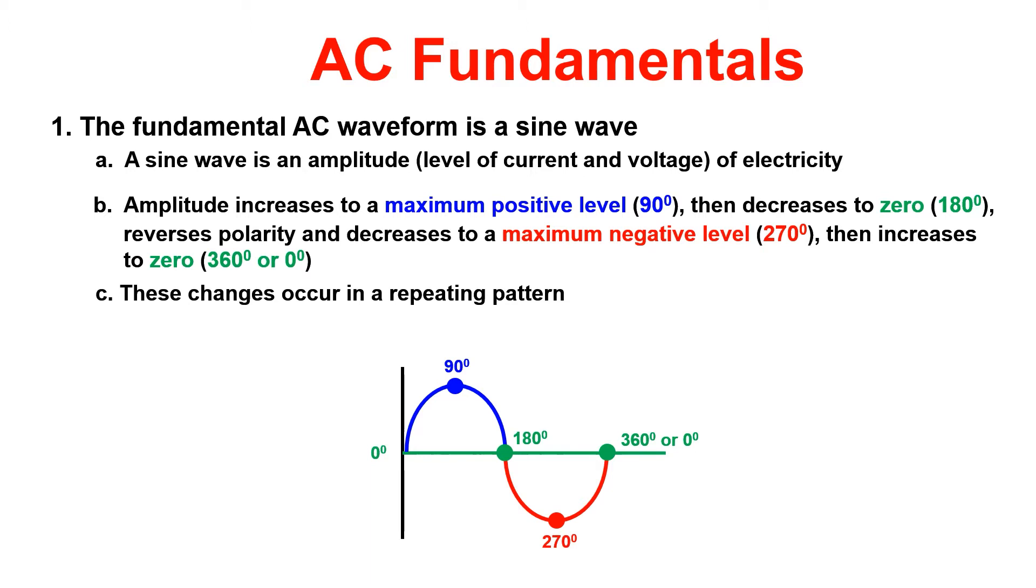Below in the graph you can see starting on the left and moving right amplitude increases from 0 degrees to 90 degrees where the maximum positive voltage will be seen. The wave then falls to 0 volts at 180 degrees where it will reverse its polarity and decrease to the maximum negative voltage at 270 degrees. The waveform then returns to the 0 degree line. The changes occur in a repeating pattern based on the frequency of the circuit.